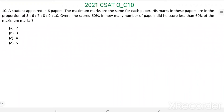Question number 10. A student appeared in 6 papers. The maximum marks are the same for each paper. His marks in these papers are in the proportion of 5:6:7:8:9:10. Overall he scored 60%. In how many papers did he score less than 60% of the maximum marks?